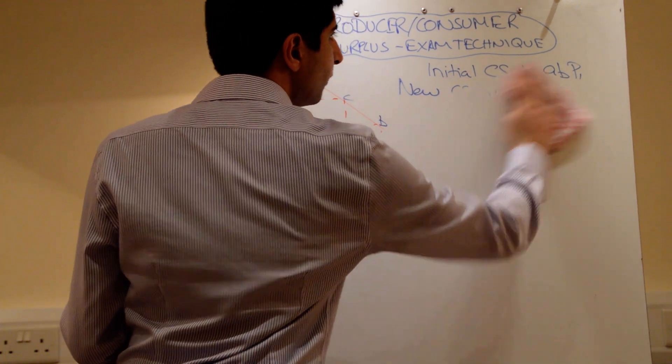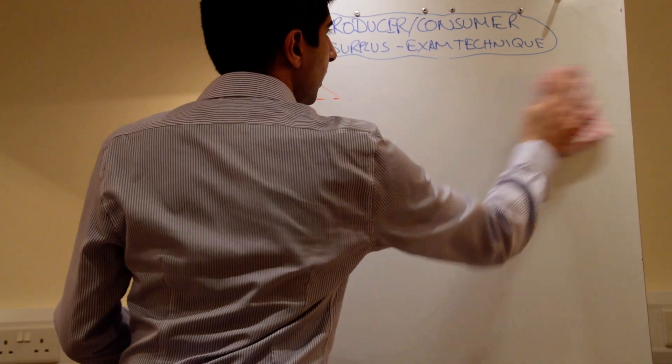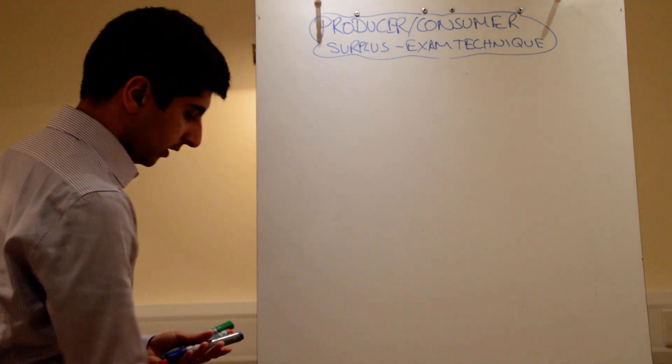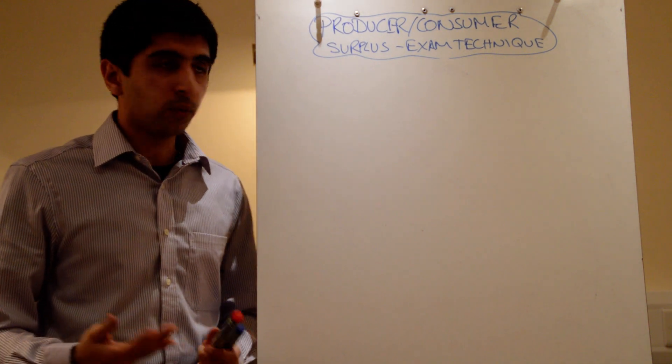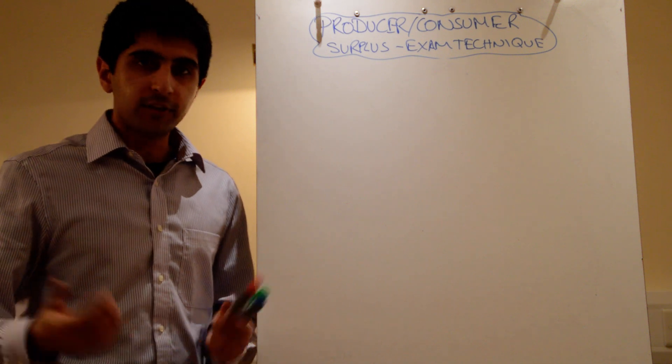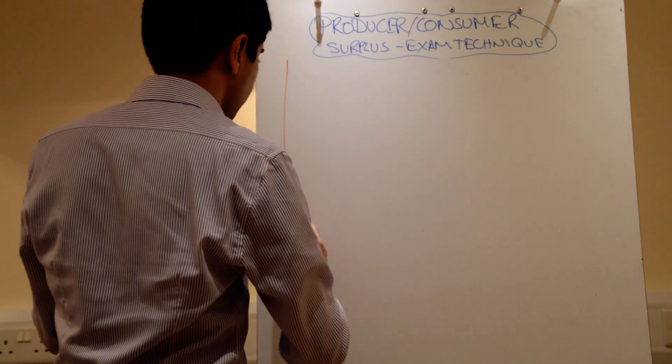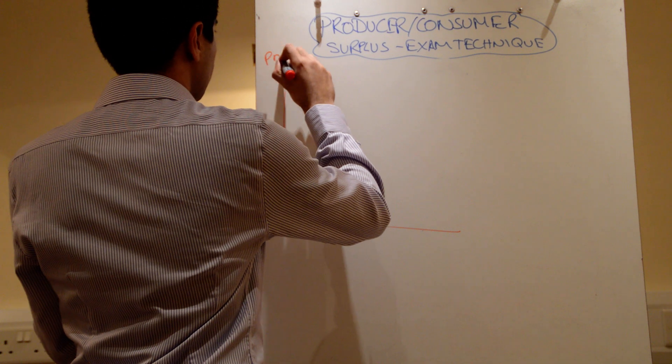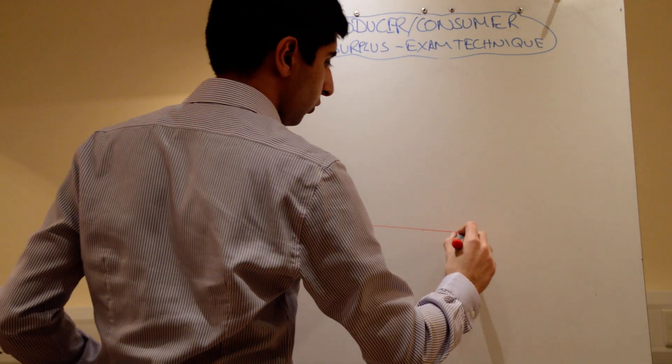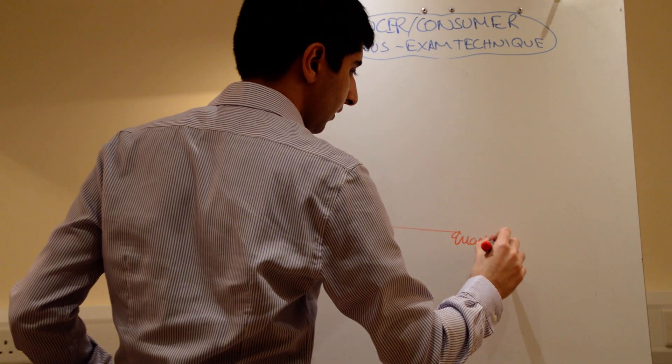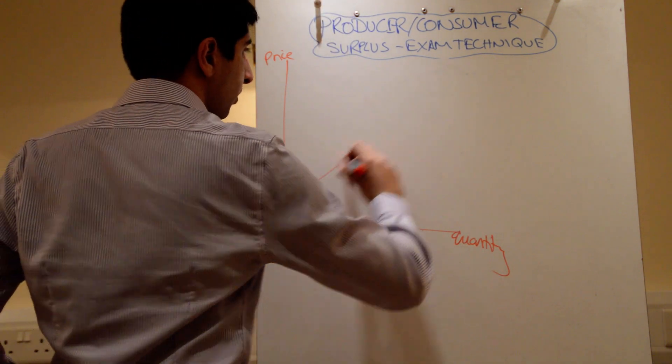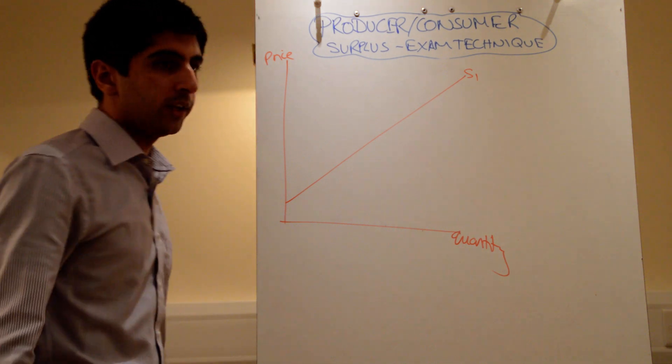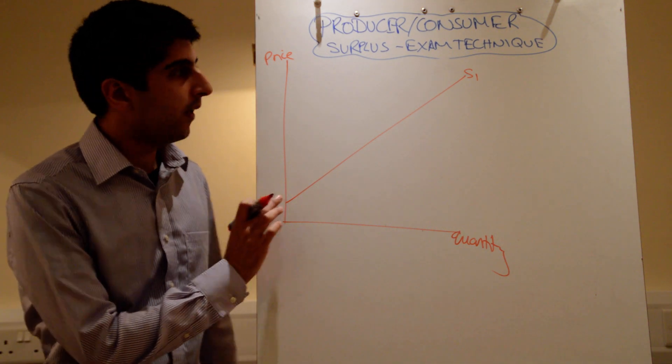What about producer surplus? Let's say the question is illustrate on a diagram what happens when the price rises. What happens to producer surplus? I hope I said producer, not consumer surplus. I can't remember what I just said there. But now, we're working with producer surplus. So, supply is the only curve we need. Again, make it touch the y-axis. Supply. That's it. That's one mark. We don't need to draw a demand curve.